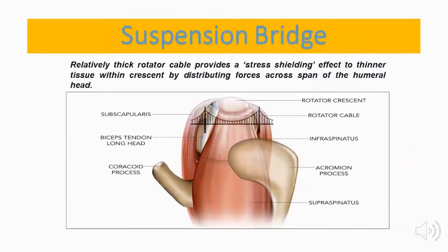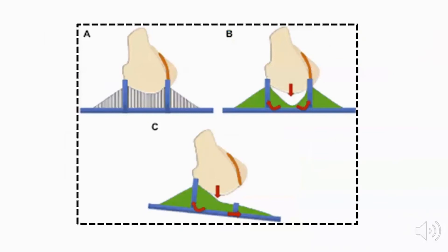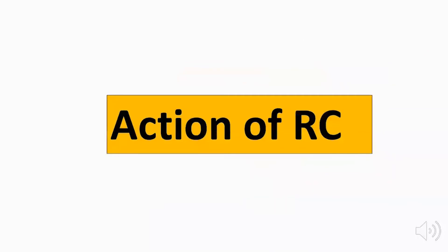The suspension bridge analogy describes how loads are transmitted through the thick rotator cuff cable, which provides a stress-shielding effect on the thinner rotator cuff crescent tissue. This occurs by distributing forces across the span of the humeral head, similar to a suspension bridge transmitting loads towards its two towers. If the suspension bridge concept is disrupted, as in rotator cuff tears, this leads to loss of the suspension mechanism and abnormal load transmission to the two pillars anteriorly and posteriorly.